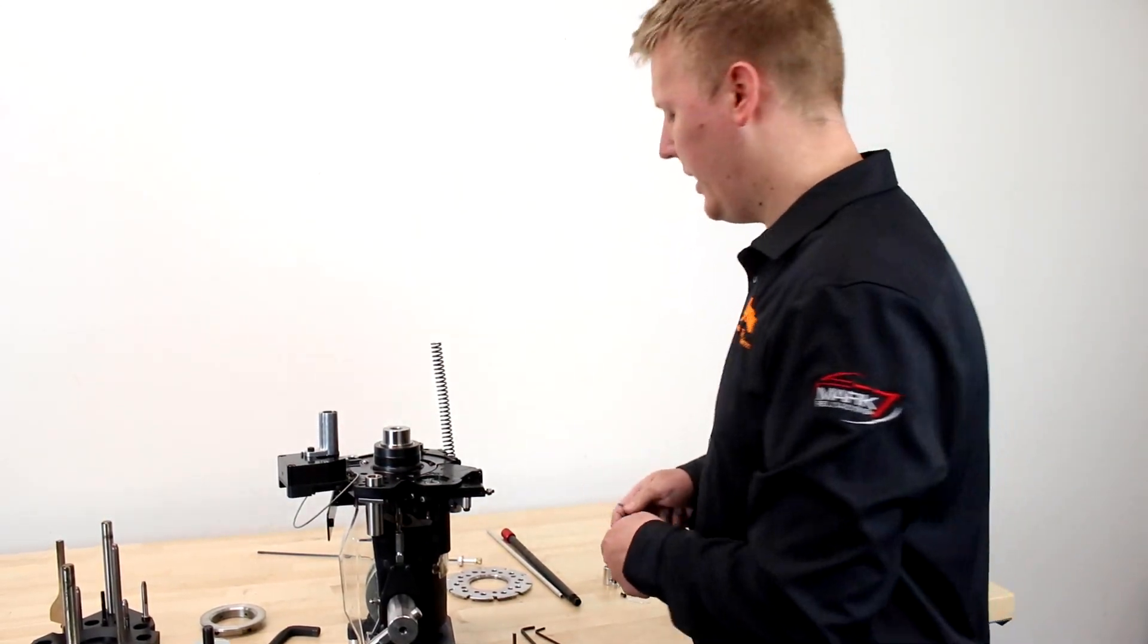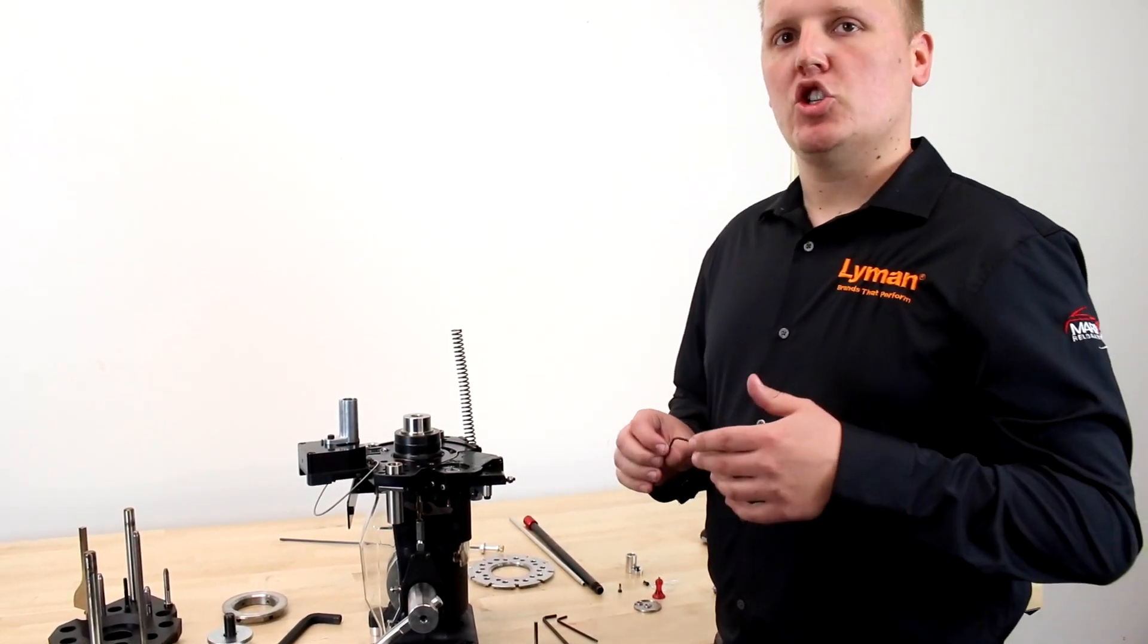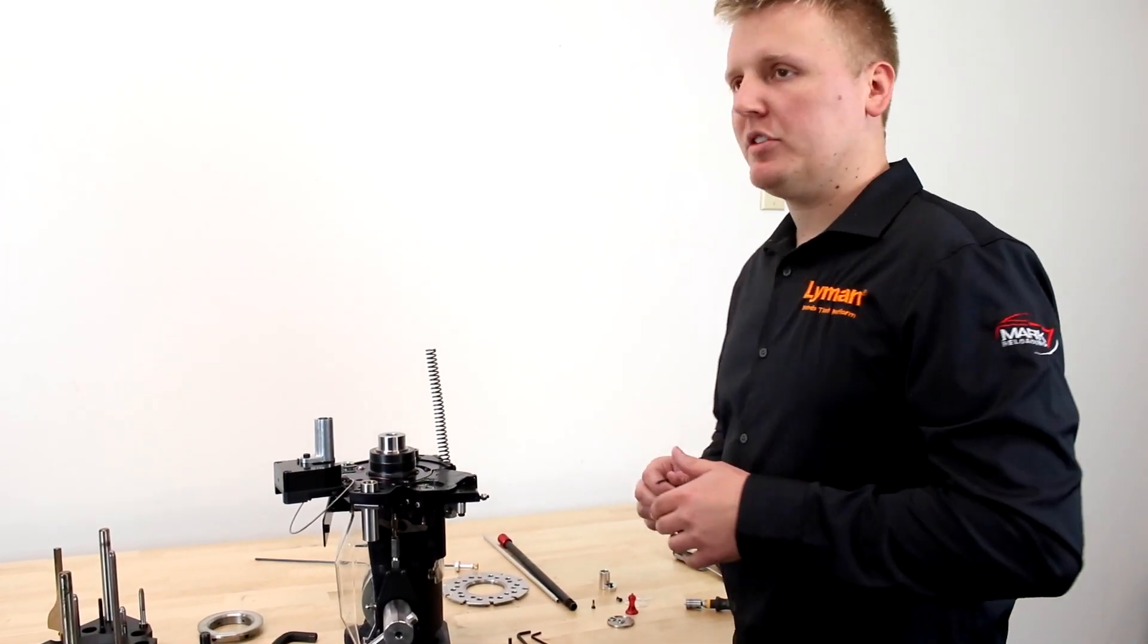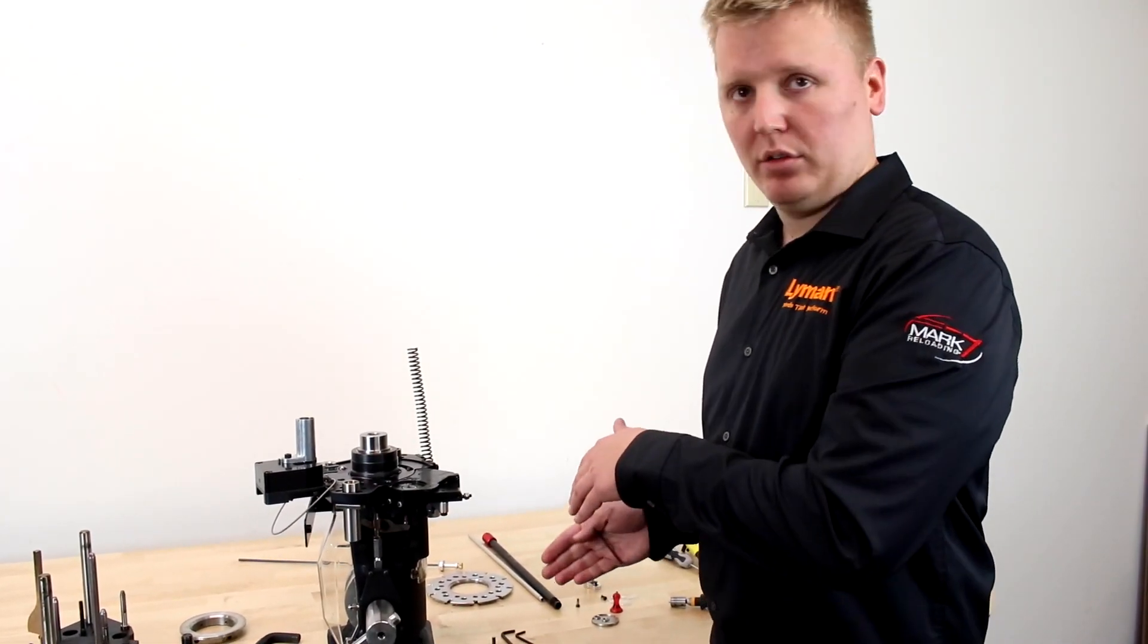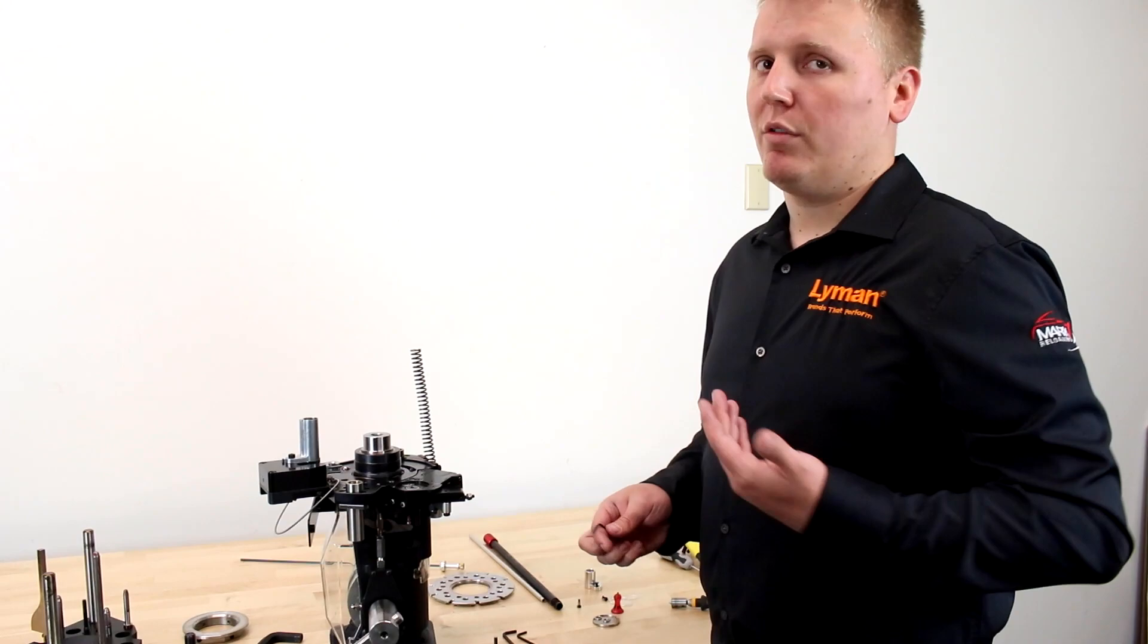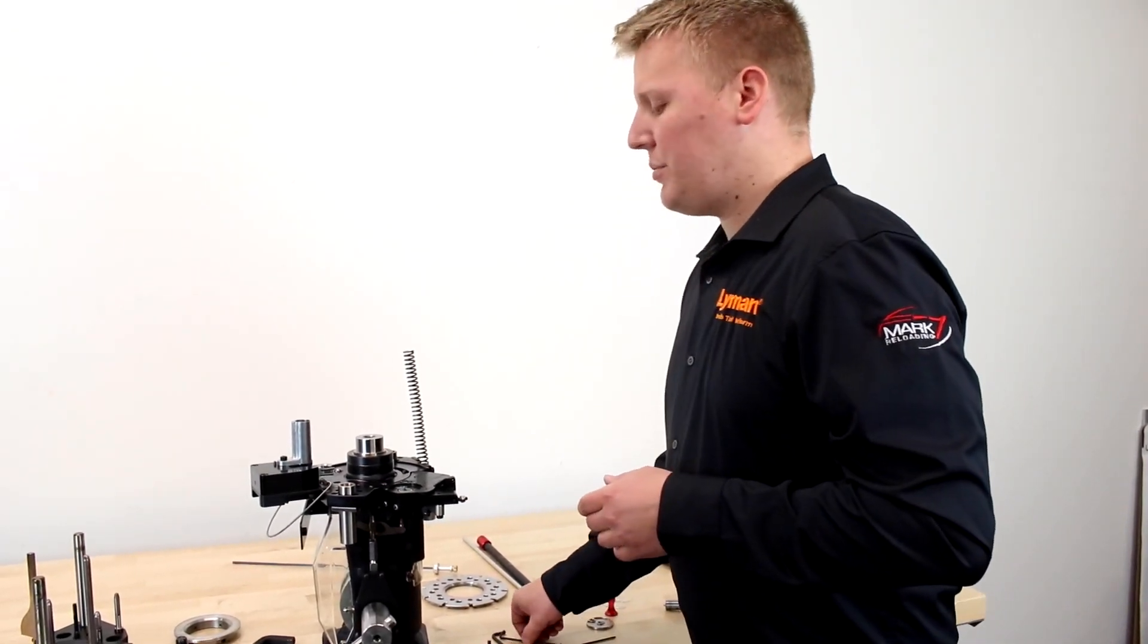All Apex 10 presses ship with the alternate priming parts than the press you ordered. So let's say you order a 9 millimeter press, you're going to get all the large priming components. If you order a 45 ACP press, you're going to get all the small priming components.